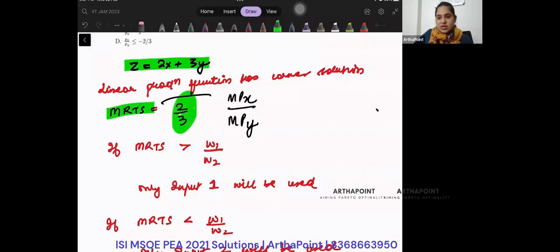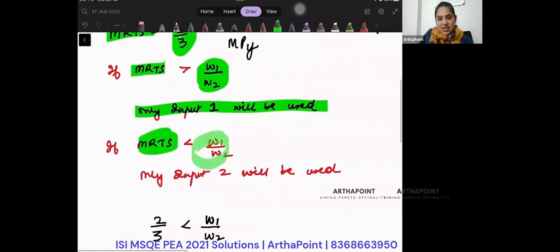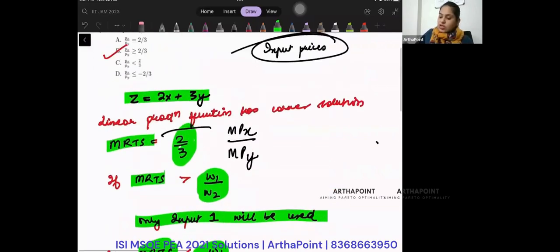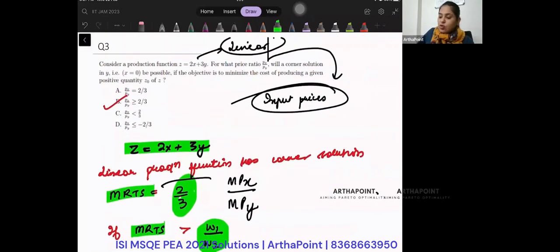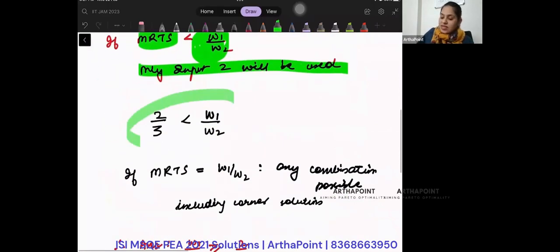Rule I have just stated: if MRTS is greater than W1 by W2, use input 1. If MRTS is less than W1 by W2, use input 2. This question is asking when will you be using only input y, where x will be 0. So I will only be using input 2 in this condition.